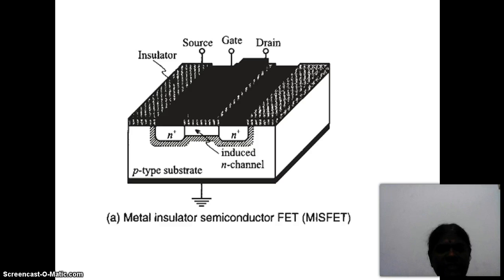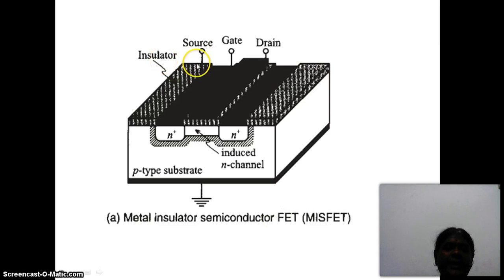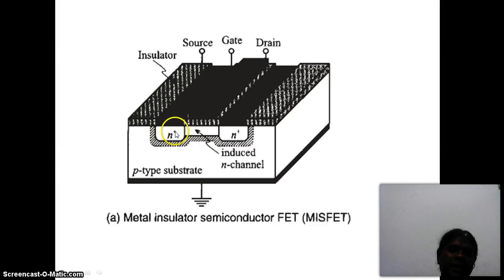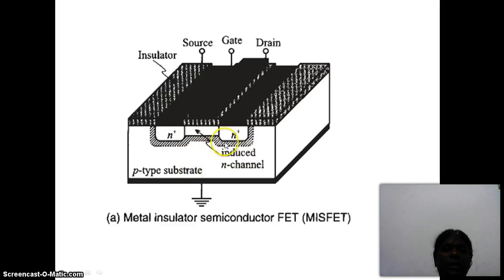This figure shows the construction of a FET. There are three terminals. In MISFET — metal insulator semiconductor FET — the gate is isolated from the channel through the insulator. The three terminals are source, gate, and drain. This diagram indicates a P-type substrate, and the source and drain are N+. N+ means highly doped, that is high concentration of impurities. So N+ regions for source and drain, and the channel is of P-type.